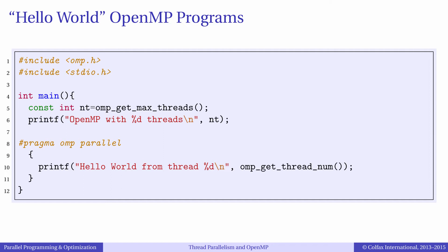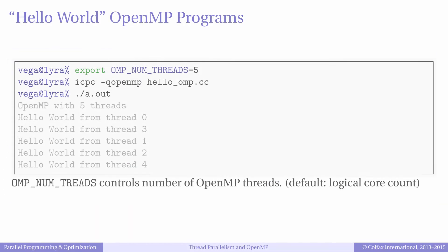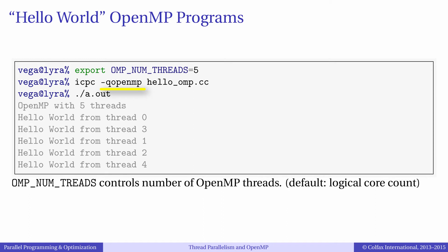In order to use OpenMP support functions such as omp_get_max_threads and omp_get_thread_num, the header file omp.h must be included. In order to compile an application that uses OpenMP with Intel compilers, use the flag -qopenmp. In order to set the number of threads available to the application, set the environment variable OMP_NUM_THREADS.